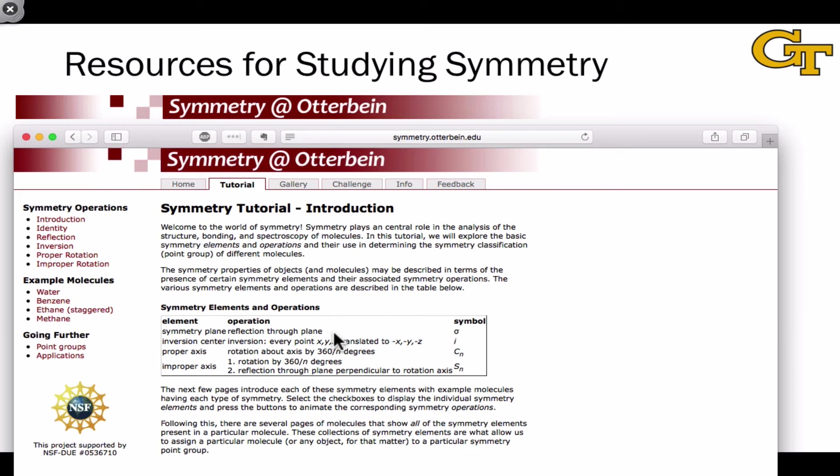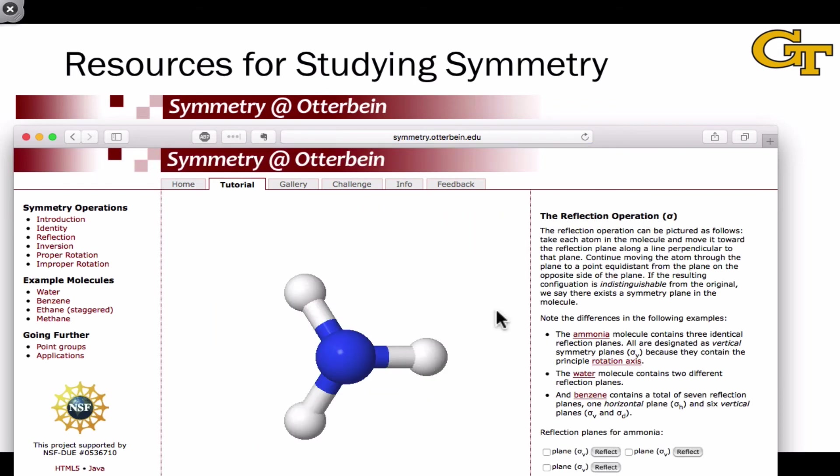And it's great for visualization because you can actually click on symmetry elements, see them, and see how the operations occur to move atoms around. The tutorial is broken up by the different types of symmetry elements, and for each one, a simple molecule or set of molecules is given with different examples of that symmetry operation. For example, for reflection, the molecule ammonia here has three planes of symmetry. We can check the box next to one of those to display it,